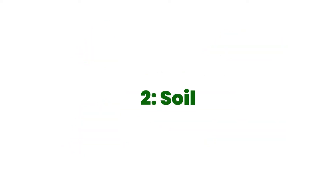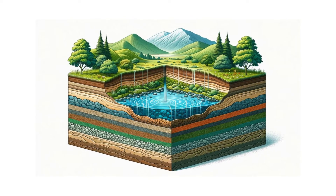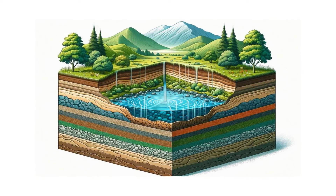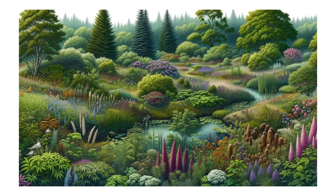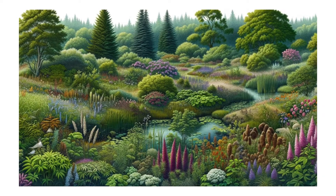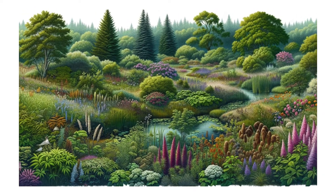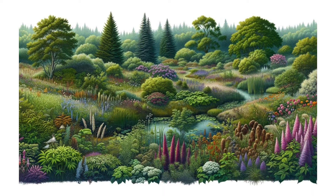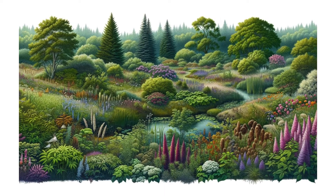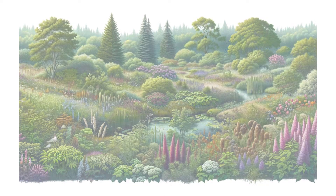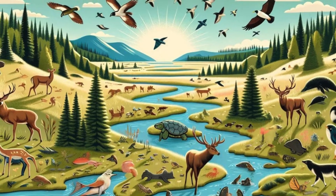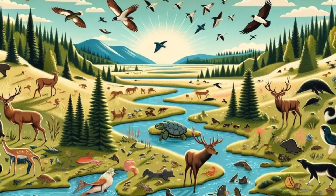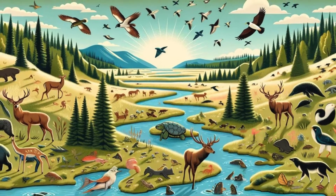Soil — the type and quality of soil affect how water is absorbed and filtered. Vegetation — plants play a crucial role in maintaining the health of a watershed by preventing erosion and promoting water infiltration.